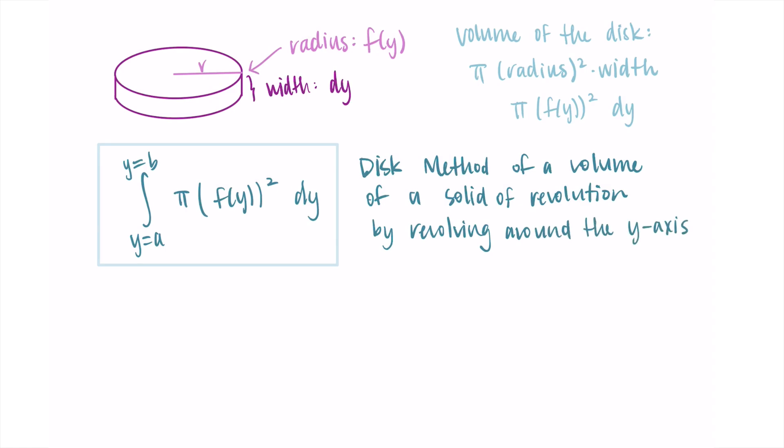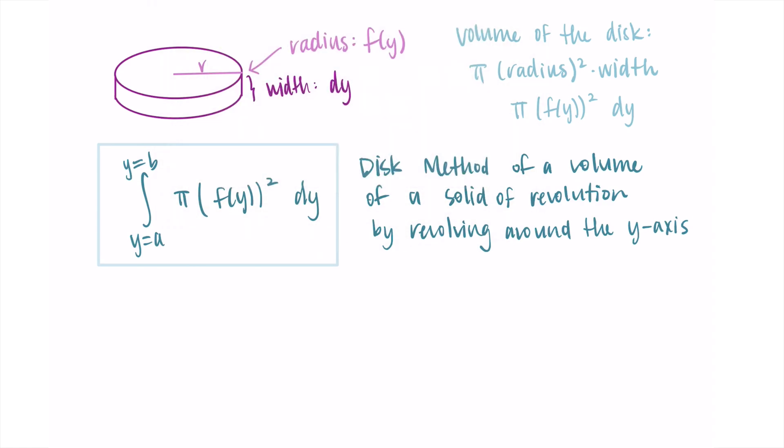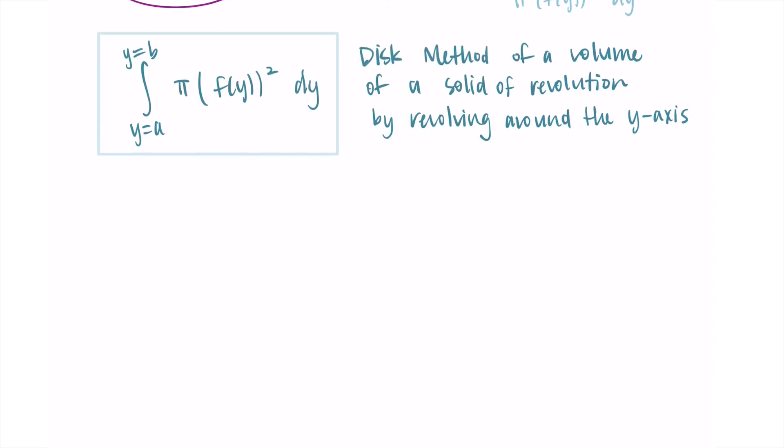So there we go — that's the disk method formula for a volume of a solid of revolution revolving around the y-axis. I want to try this on an example just to show you what it looks like, so let's go ahead and do that. I've drawn a little cylinder here that'll come in handy in a moment.